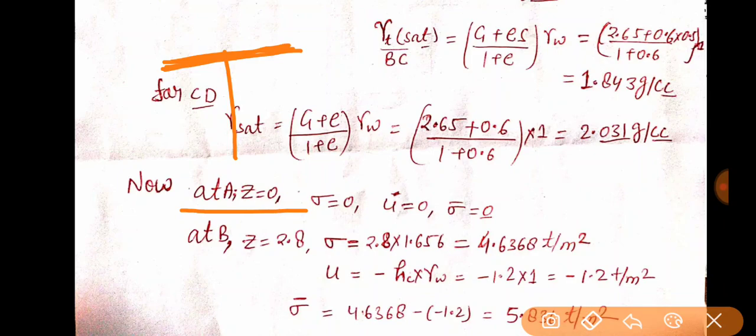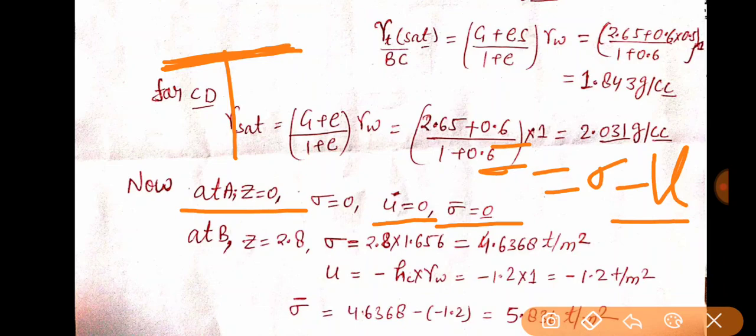If I am talking about U — pore water pressure — pore water pressure considers the effect of only and only water. It considers only the water's effect. But if I talk about sigma bar, sigma bar = sigma − U. That's the formula. At point A, Z = 0, sigma = 0, U = 0, so sigma bar = 0 as well.